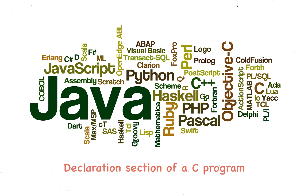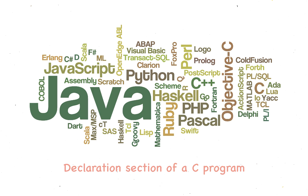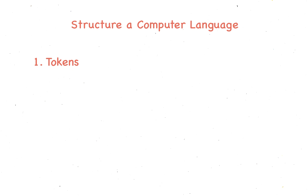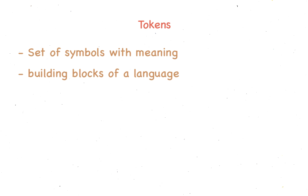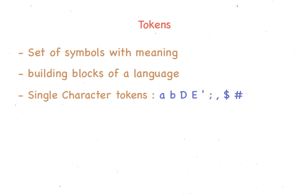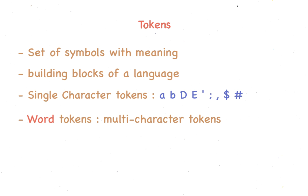A computer language is like any other spoken language. It has its own tokens and grammar. Tokens are a set of symbols with their own meaning and are the building blocks for a language. Tokens can be lowercase alphabets, uppercase alphabets, punctuation, or even special symbols. We can also create a multi-character token called a word and demonstrate it as a sequence of alphabets.